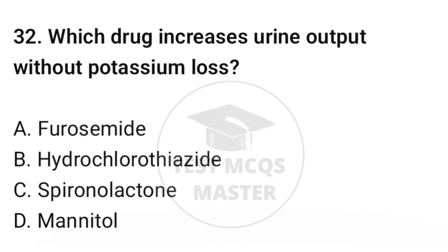Question number thirty-two: which drug increases urine output without potassium loss? The correct option is C: Spironolactone.